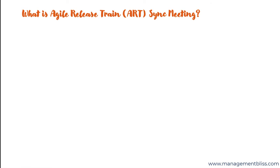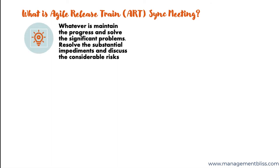Agile Release Train Sync Meetings are done to gather and discuss whatever is required to maintain the progress and solve significant problems. These meetings are held to resolve substantial impediments and have discussions related to considerable risks, to identify which of them require immediate attention and which can be ignored.